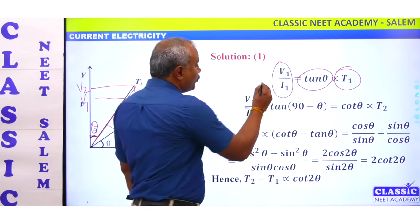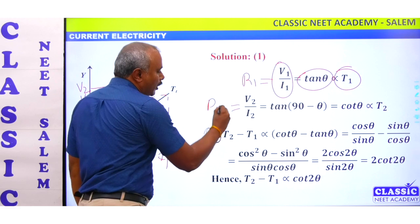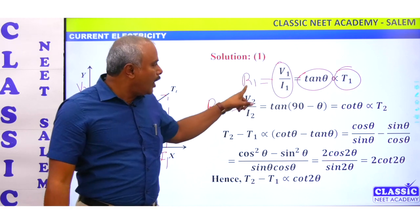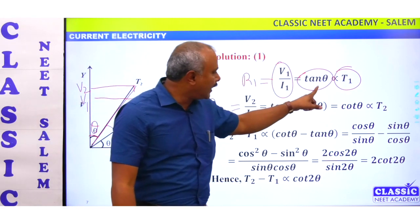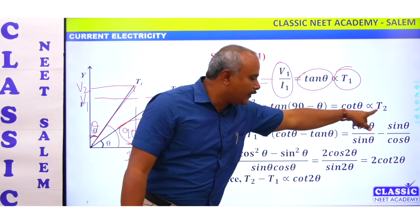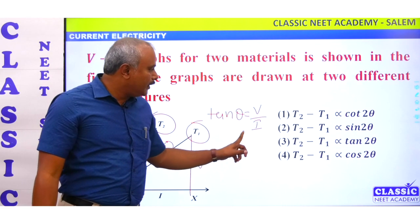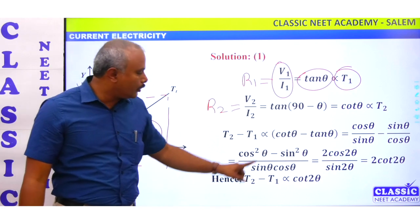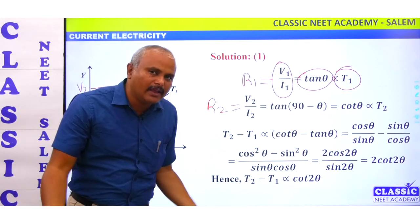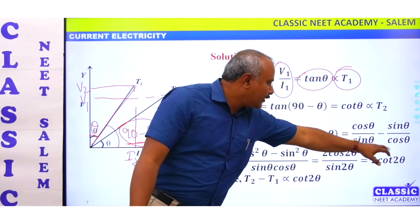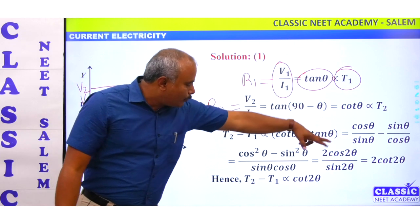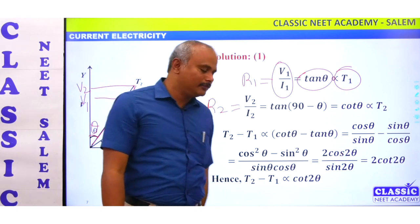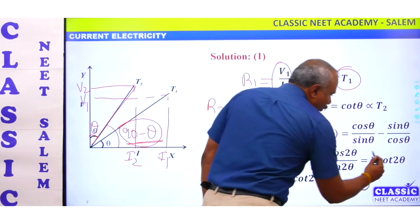So V1 by I1 is R1, and V2 by I2 is R2. R1 is proportional to V1 by I1, R2 is proportional to V2 by I2. R1 is proportional to temperature, so tan theta is proportional to T1 and cot theta is proportional to T2. Then T2 minus T1 equals cot theta minus tan theta. Substituting: cot theta equals cos theta by sin theta, tan theta equals sin theta by cos theta. This gives cos squared theta minus sin squared theta over sin theta cos theta, which equals cos 2-theta — so the final answer is 2 cot 2-theta.